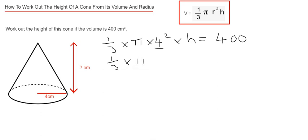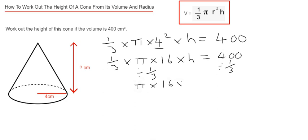So on the next line we've got a third times pi times 16 times by the height equals 400. The next thing we're going to do is get rid of the times by a third, and we can do that by dividing both sides by a third. So that gives us 1,200.